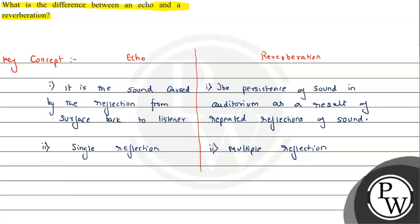Third important point regarding echo - the minimum distance between observer and obstacle